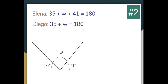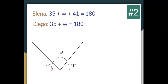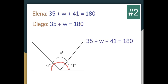In the next situation, Elena thinks that 35 plus W plus 41 equals 180, while Diego thinks 35 plus W equals 180. We can see there is a straight angle of 180 degrees, and connecting all three angles — 35, W, and 41 — they together make that straight angle. Therefore Elena is correct: 35 plus W plus 41 equals 180.